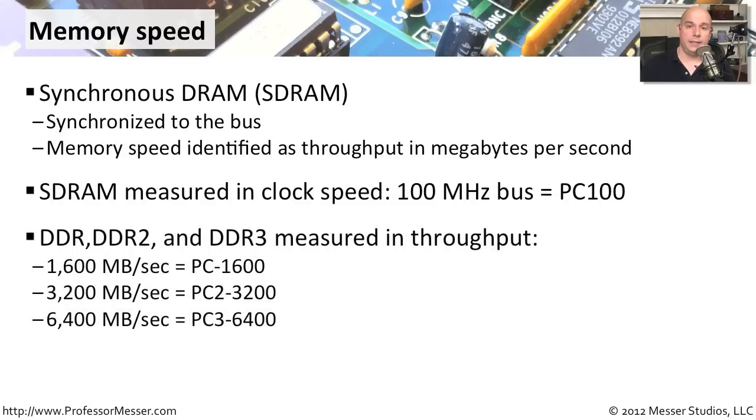DDR memory, DDR2, and DDR3 memory does not use the memory bus clock rate as the designation. DDR memory has PC in front of it. For DDR2, it's PC2, and for DDR3, it's PC3. The number immediately after refers to the throughput of that memory in a single clock cycle, measured in megabytes per second.